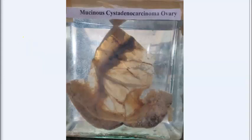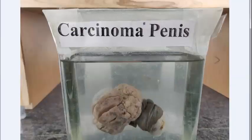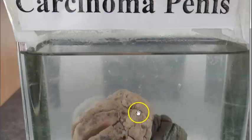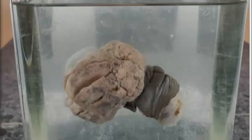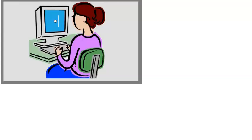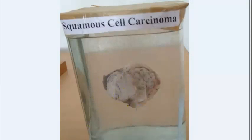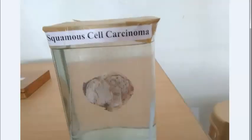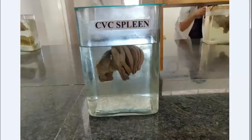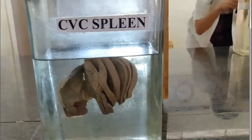Carcinoma of the penis — you can see a cauliflower-like appearance, so this is squamous cell carcinoma: friable, gray-white, fungating, cauliflower-like growth. In microscopy for squamous cell carcinoma, you will see keratin pearls.